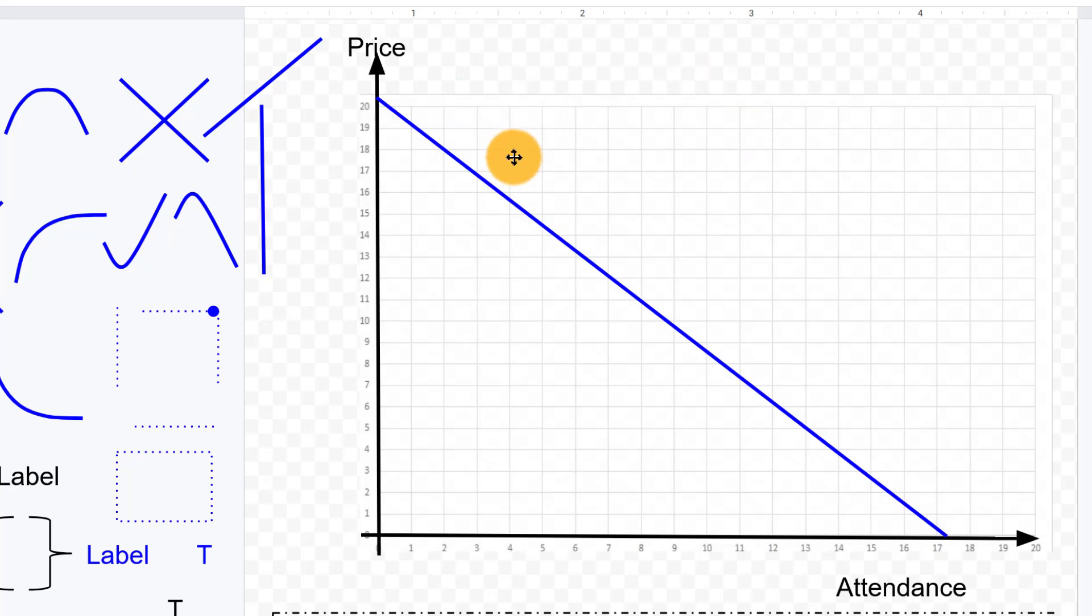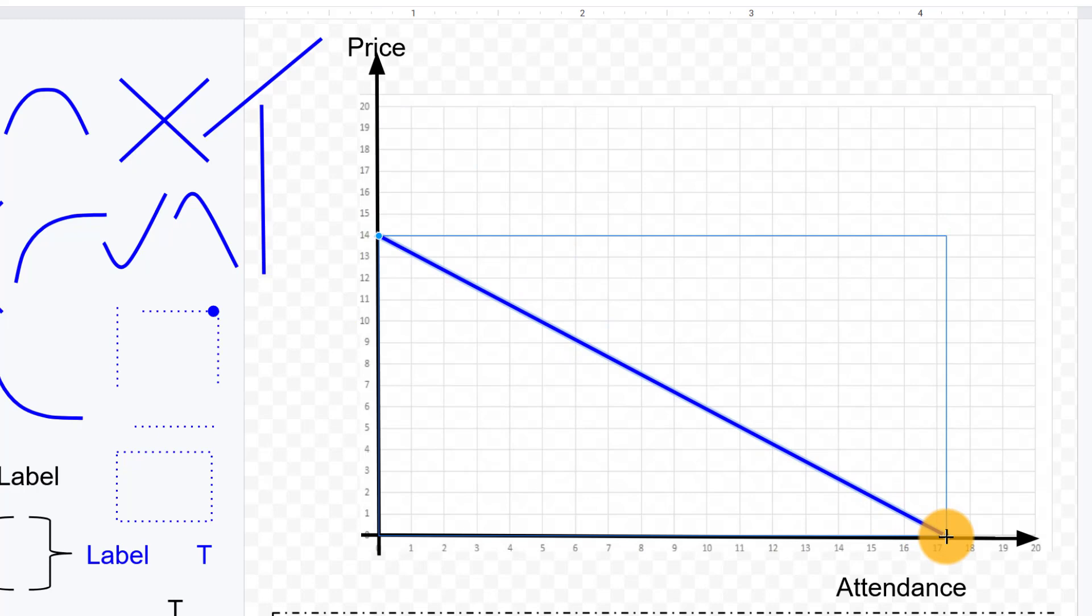All right, since we've mentioned the idea of direct and inverse relationships and mentioned the idea of positive and negative slope, let's look a little bit more closely at the idea of slope and the equation of a line. Let me redraw this a little bit. I'm going to put the y-intercept right here at the number 14. And I'm going to put the x-intercept down here at the number 7.